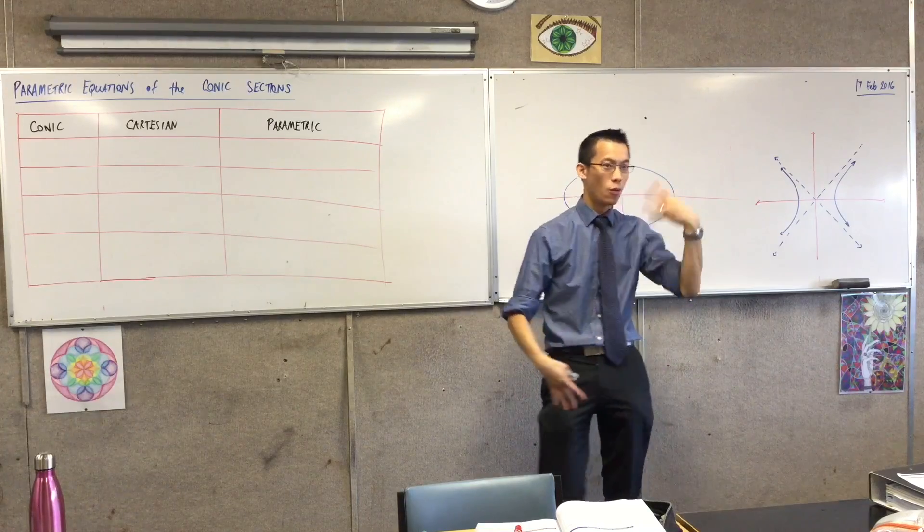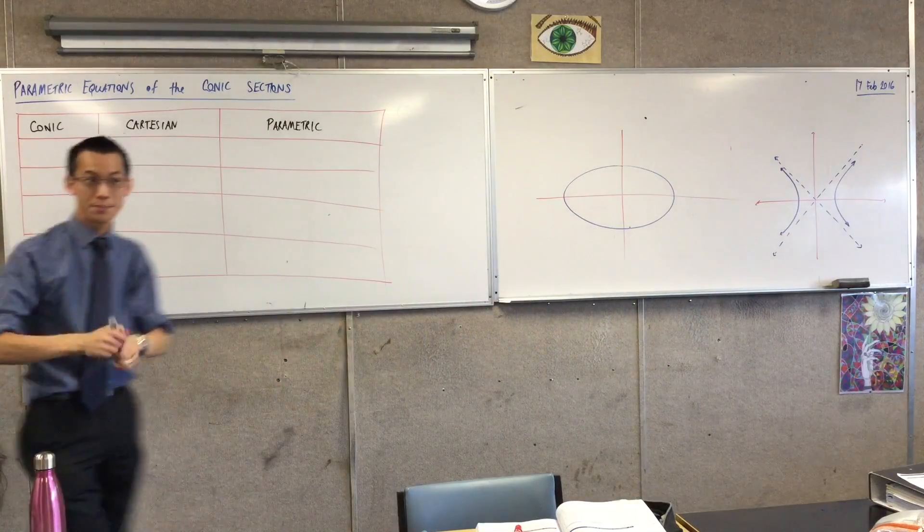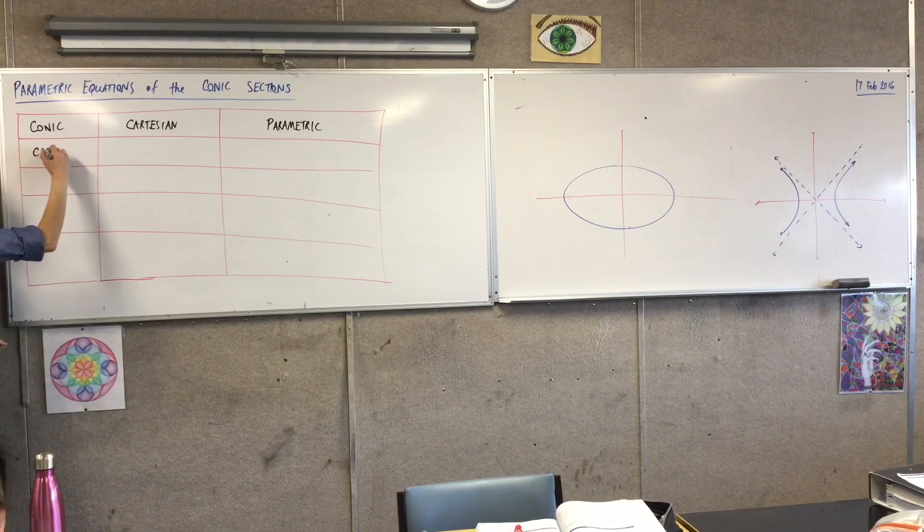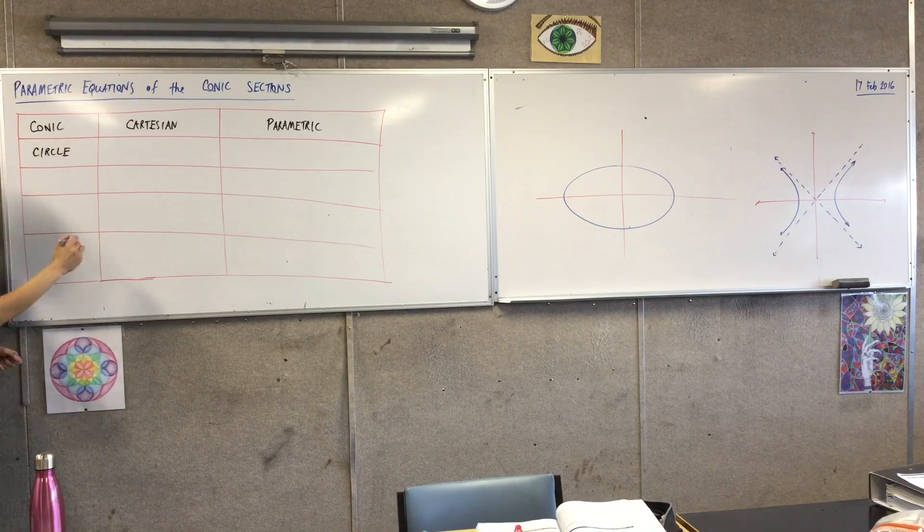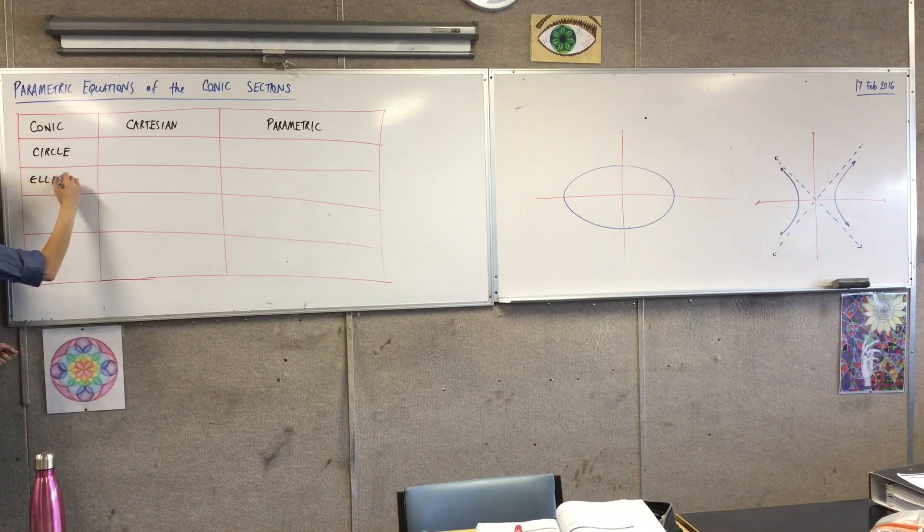So to begin, what are the four conics in order? One, circle. We start with the circle. What do we do next? The ellipse. The ellipse is what happens when you stretch that circle out, the parabola.